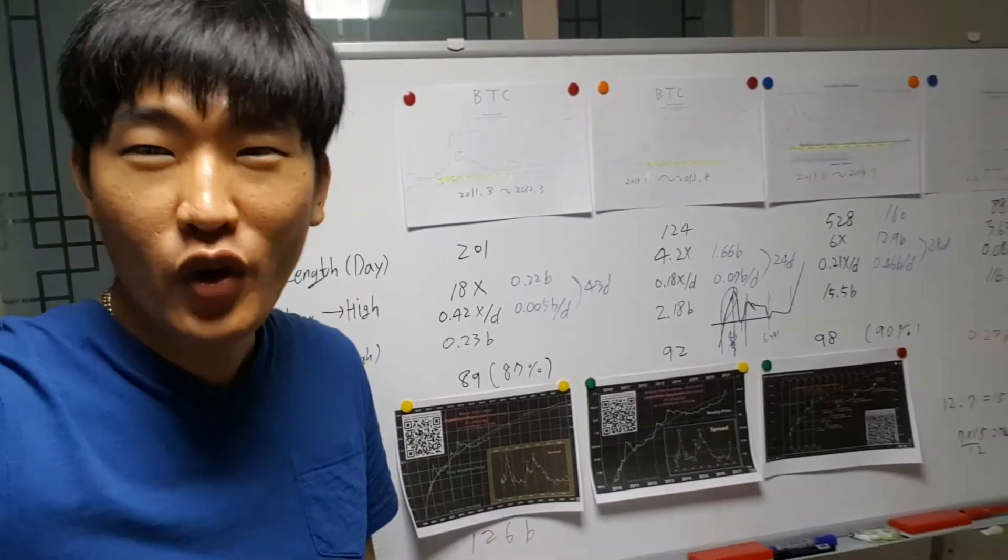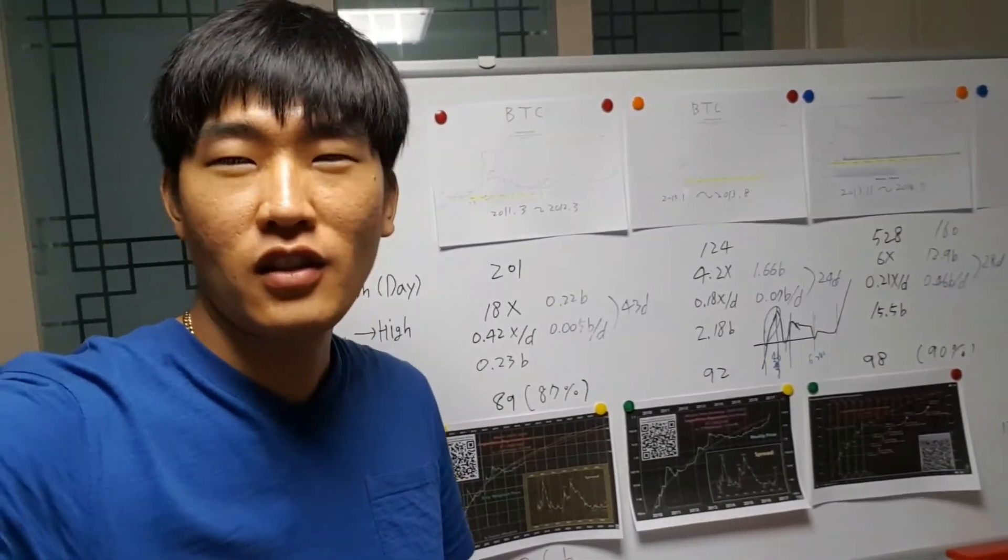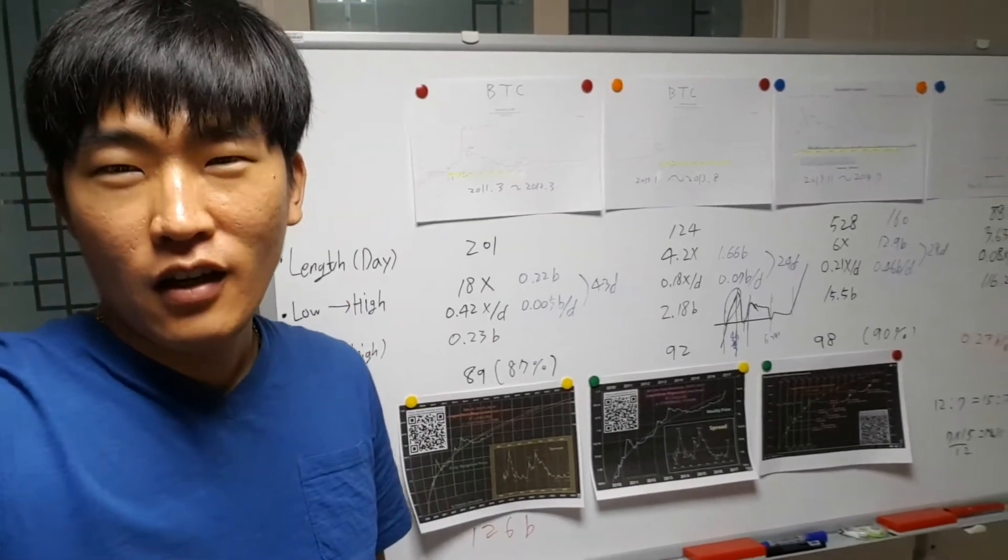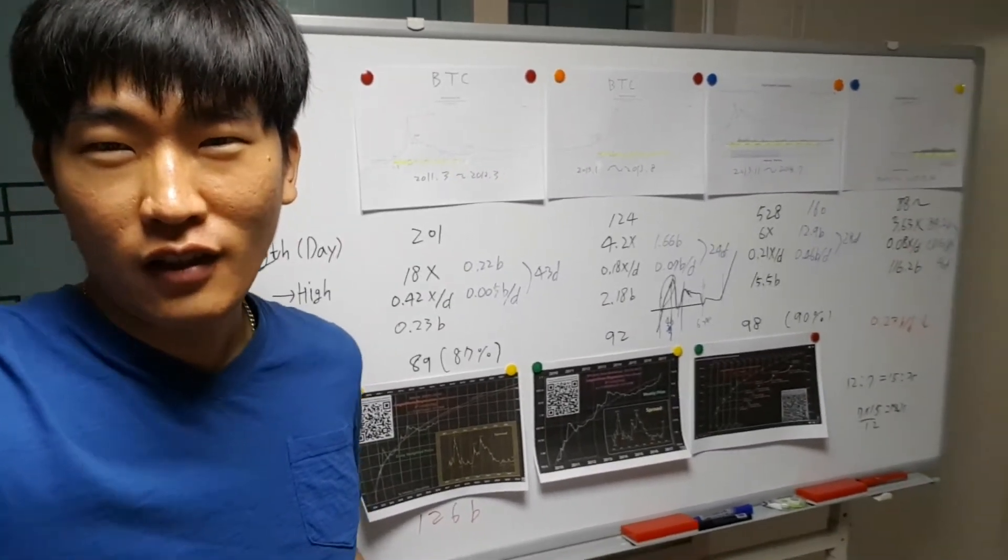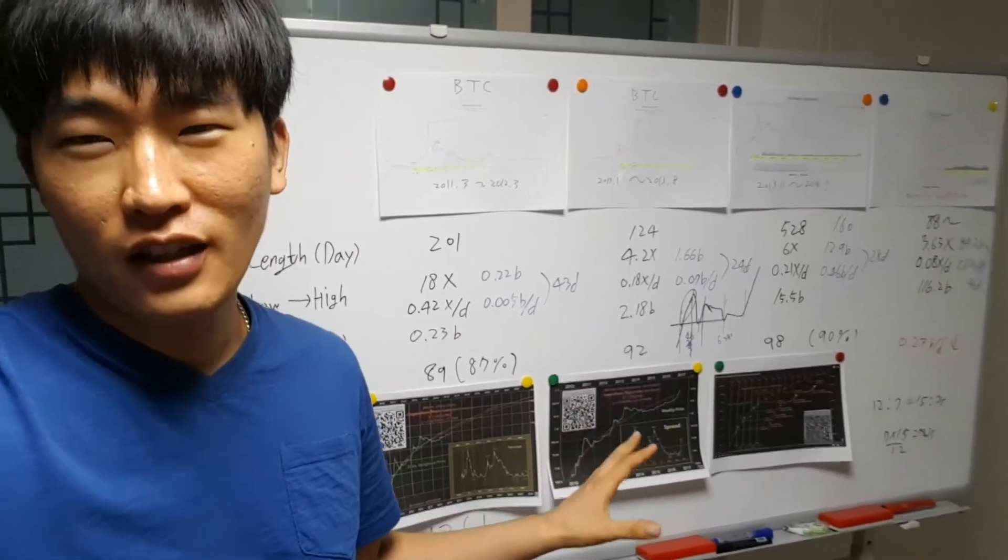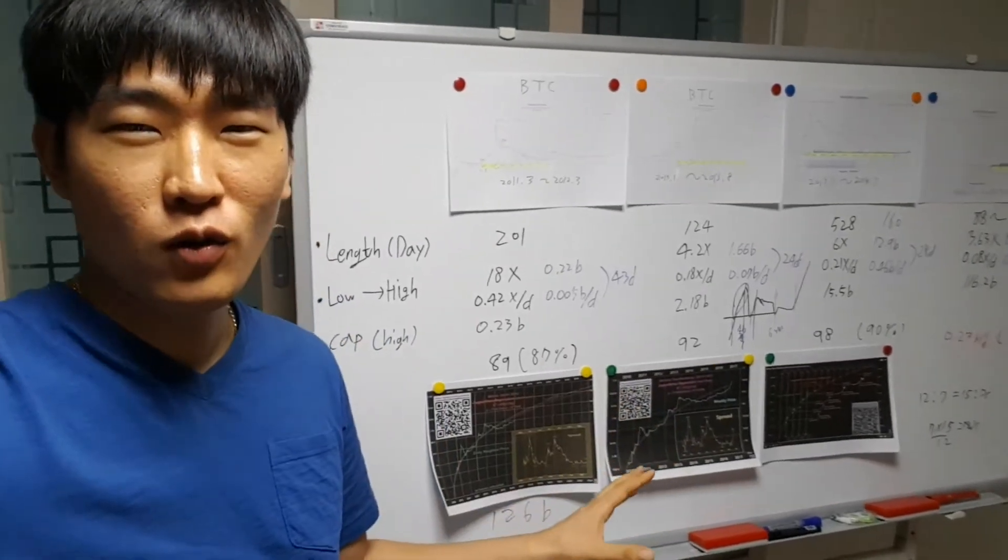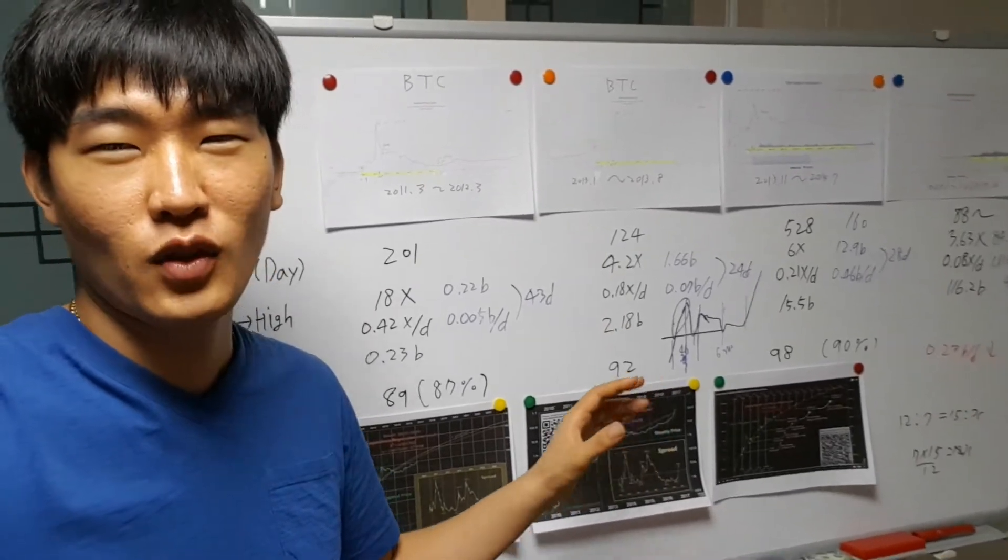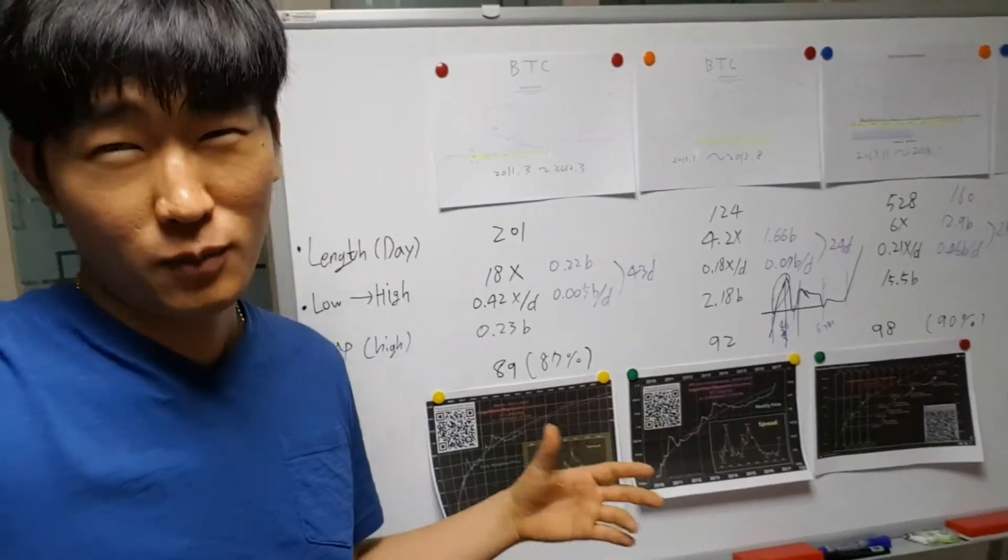So what I'm doing is I'm looking for new ICOs and what my brother is doing is analyzing the market, where it's gonna go and stuff like that. He's calculating all the numbers.